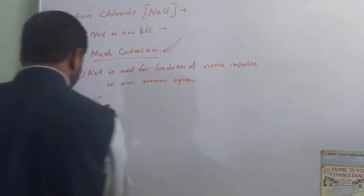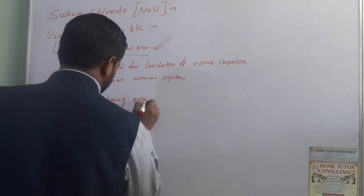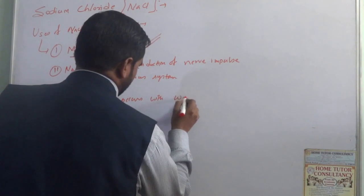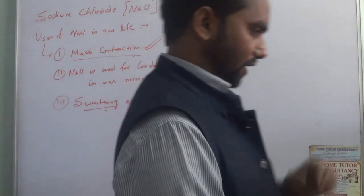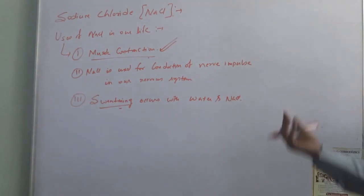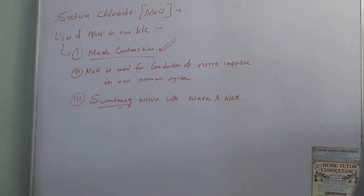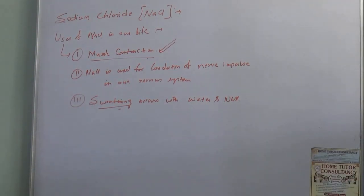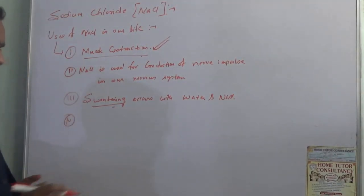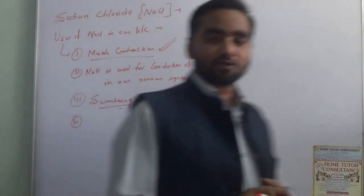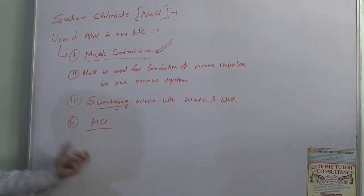Third, when sweating occurs, NaCl comes out along with water. Sweating is a process that happens when we work or when there is extra temperature; NaCl is present in sweat and comes out mixed with water. Fourth, our digestive system contains HCl — hydrochloric acid — and NaCl is needed to produce this hydrochloric acid in the stomach.